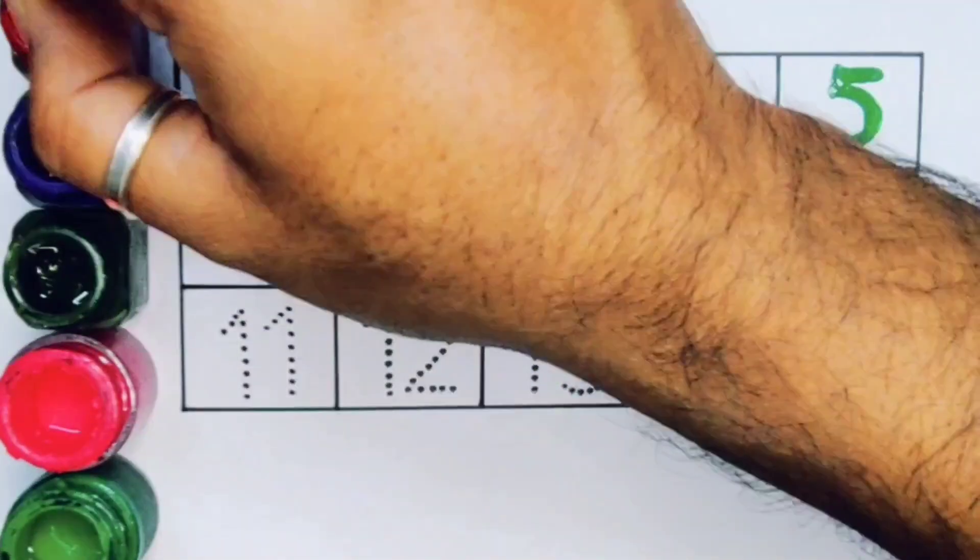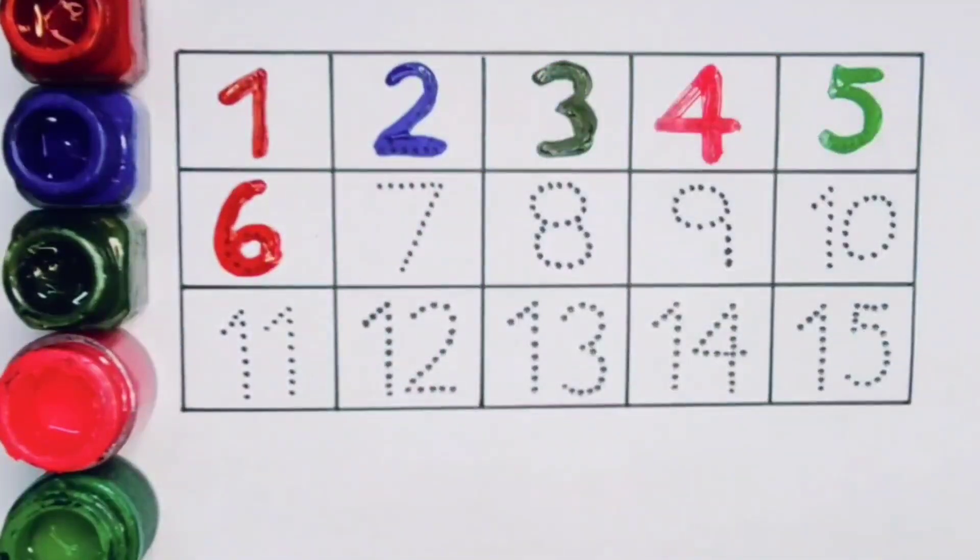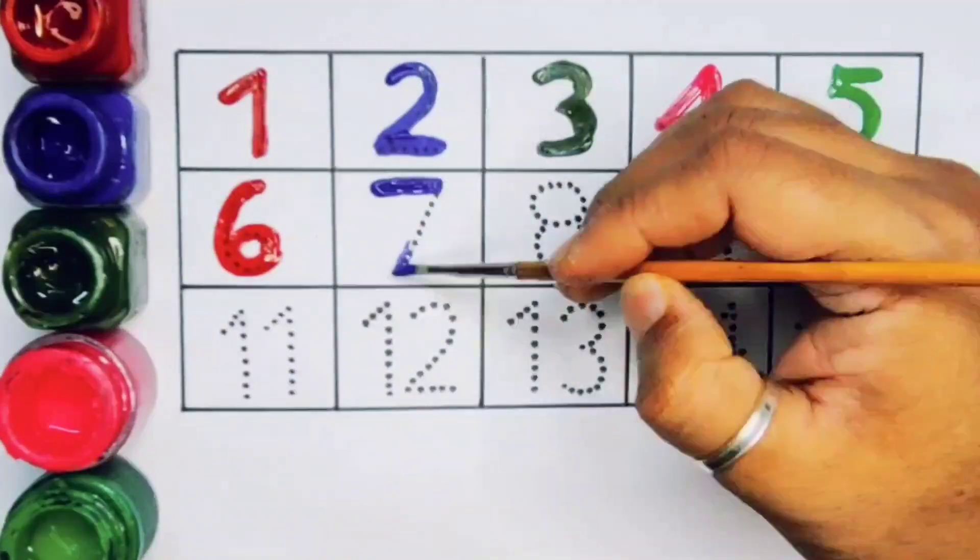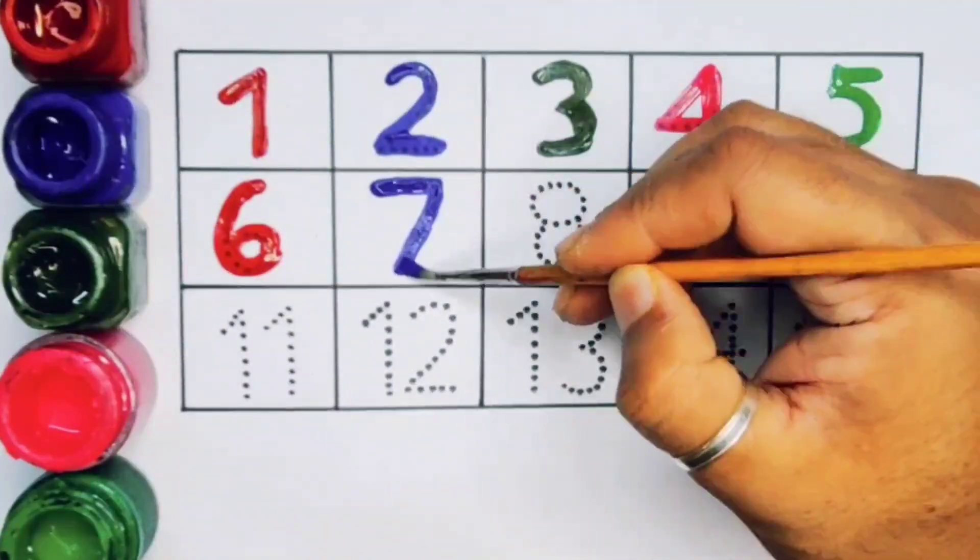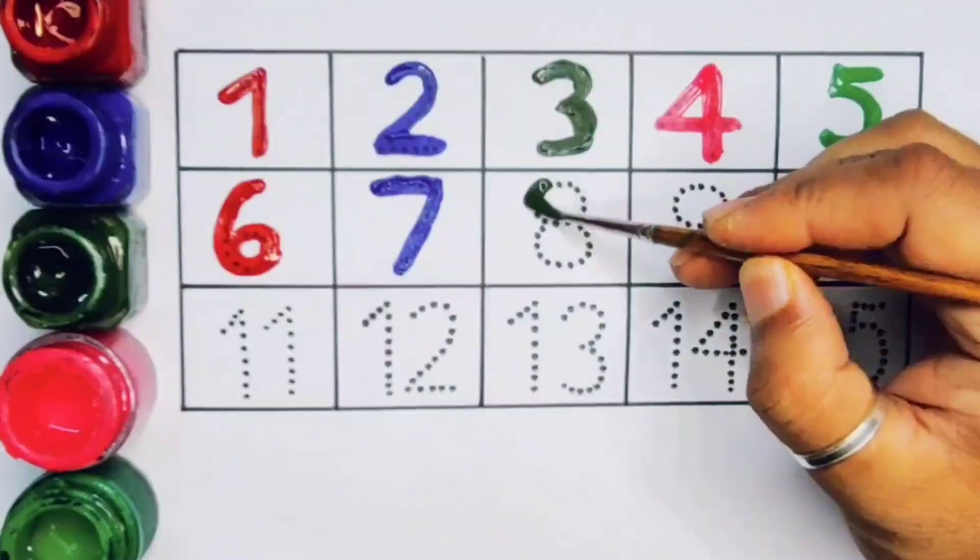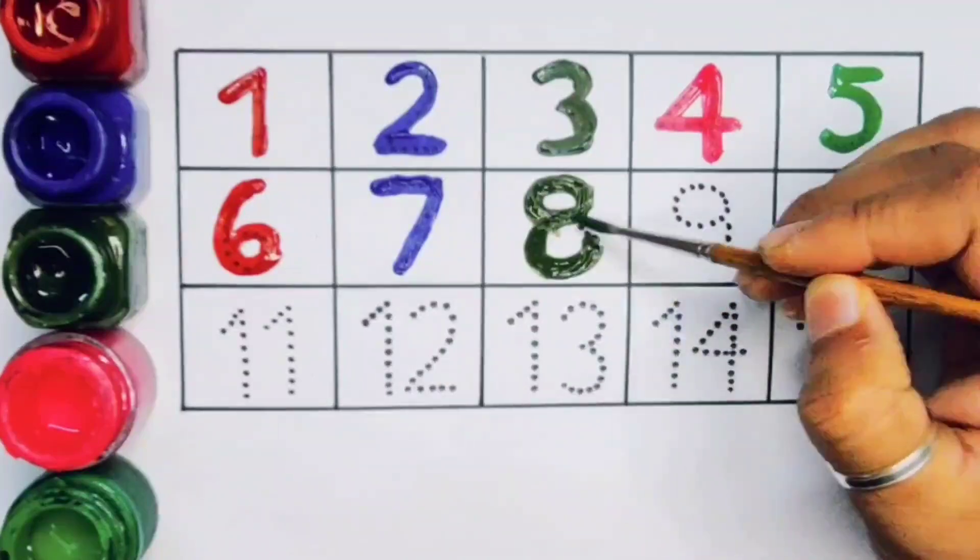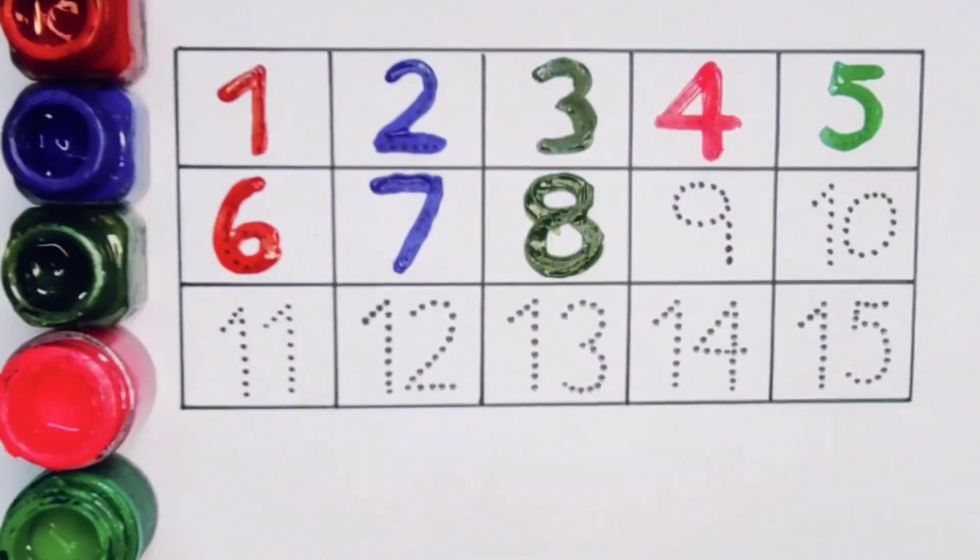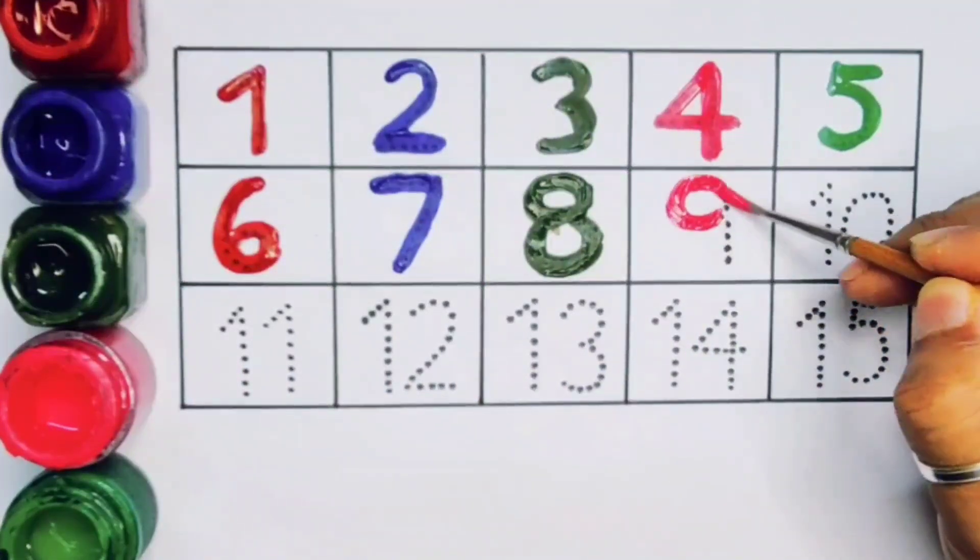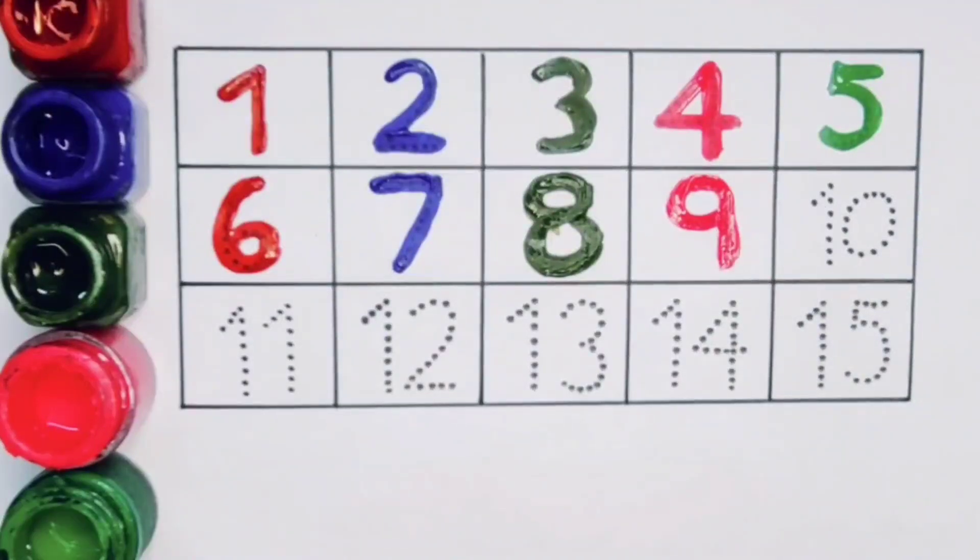Next, 6, number 6. Next kids, 7, number 7. Next, 8, number 8. Next kids, 9, number 9.